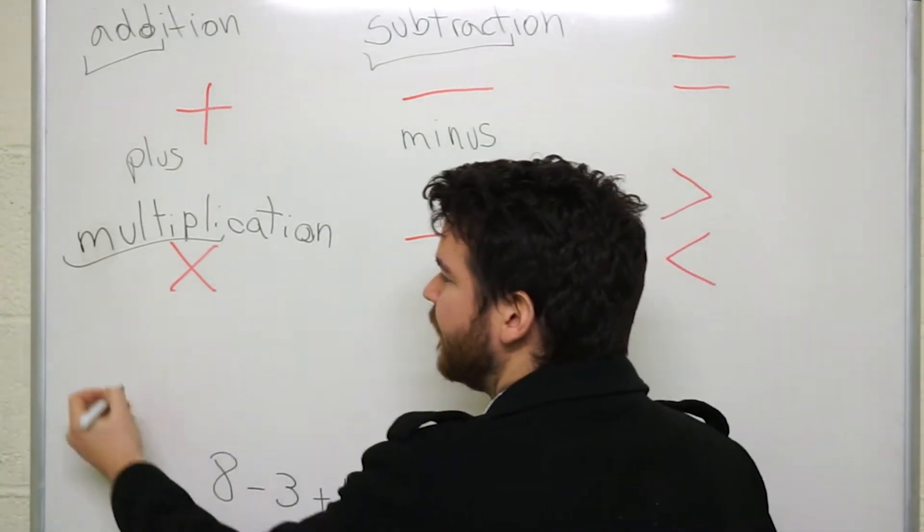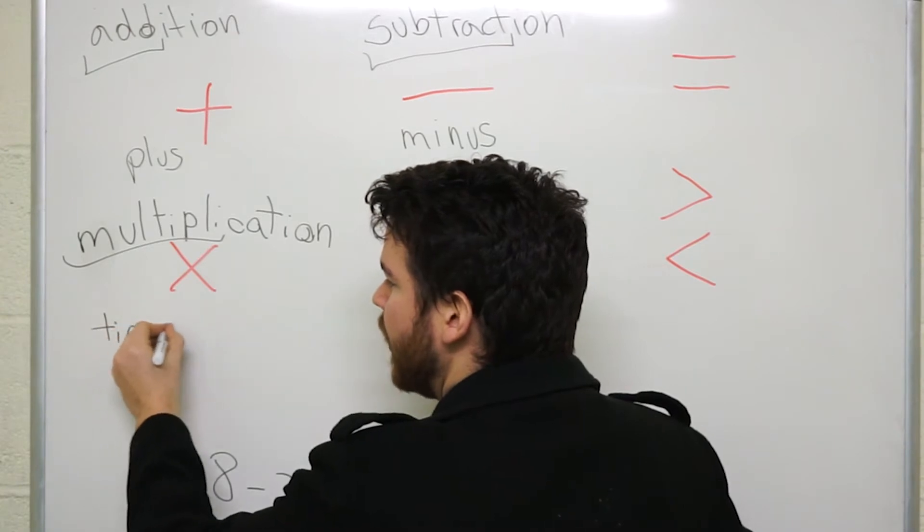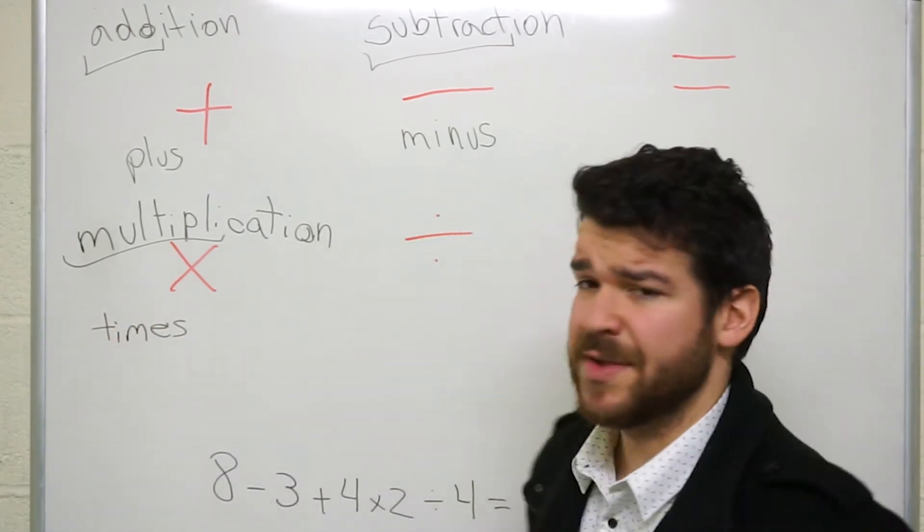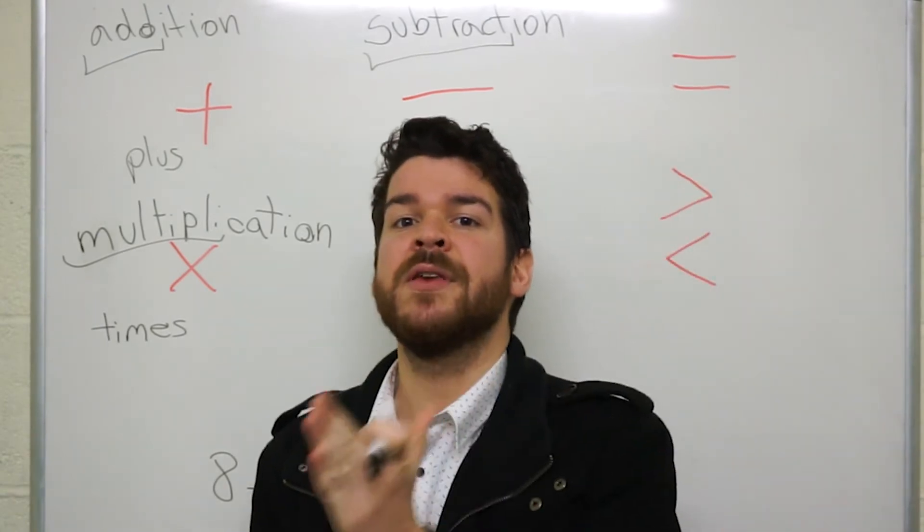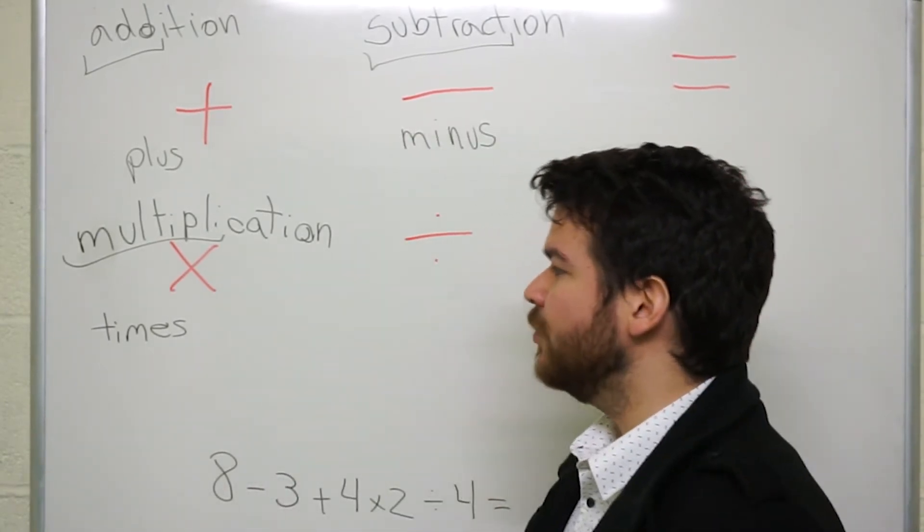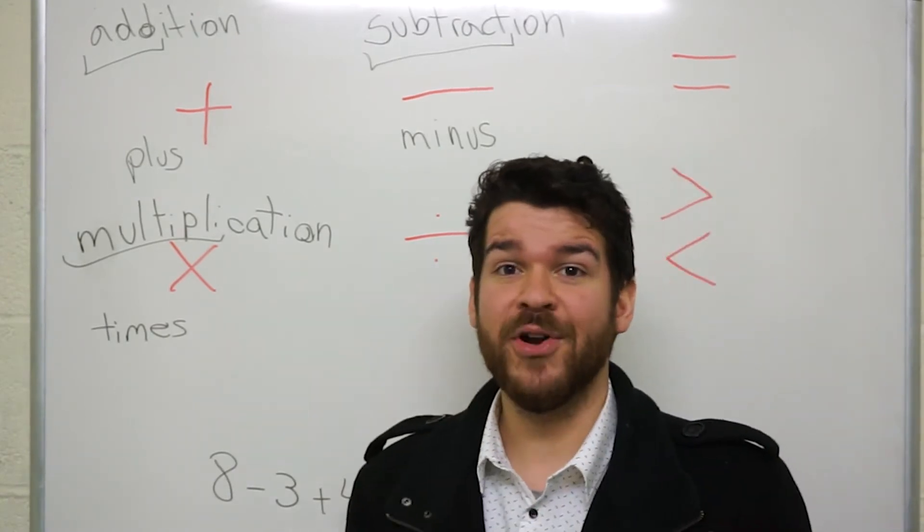And the name of this little fella here is times. So when we're talking about math, it is two times two. And then we have four. So times something.